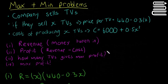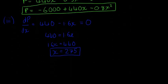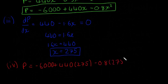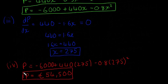And the last bit is, what is that maximum profit? So we'll do it in red. Part four is going to be, we're just going to sub this value here into our function for profit. It's going to be equal to minus 6,000 plus, sorry, there should be another zero there, 6,000 plus 440 by 275 minus 0.8 by 275 squared. Our profit then is going to be given by, I'll give it in euro, €54,500. And there is our answer.